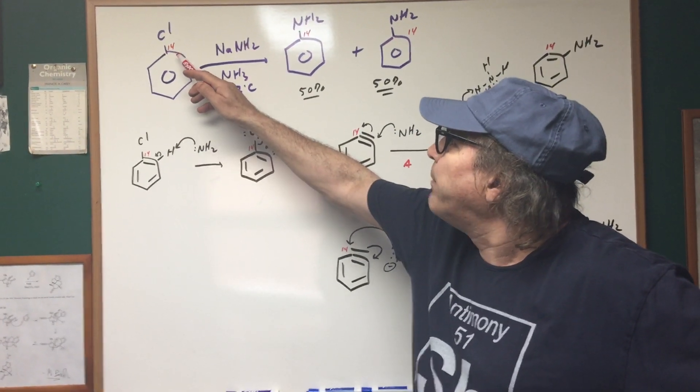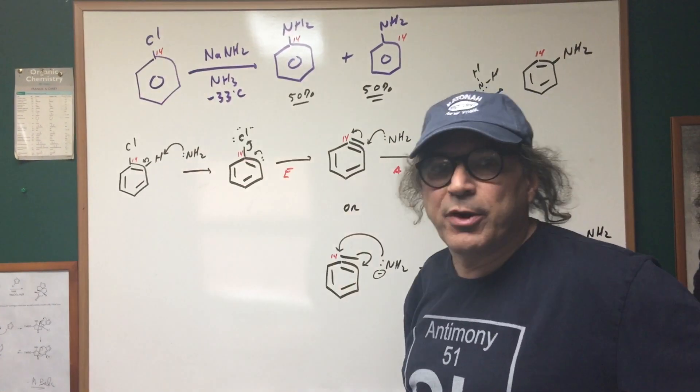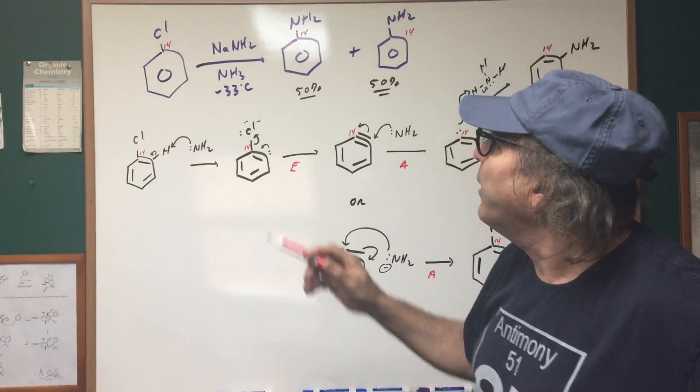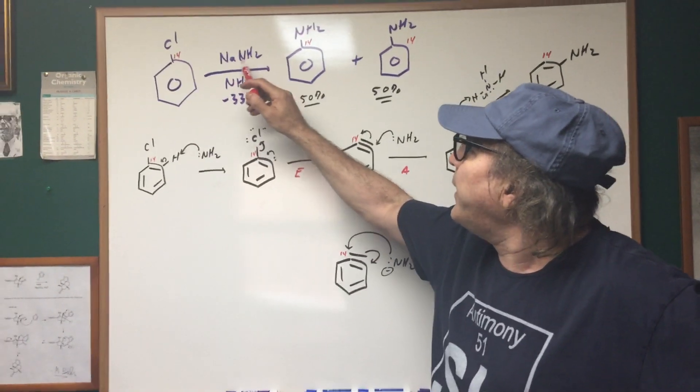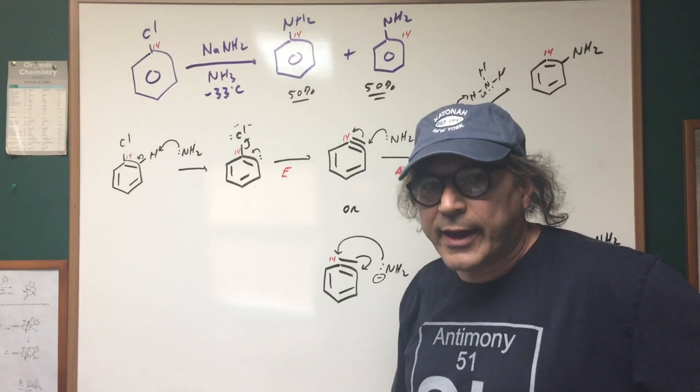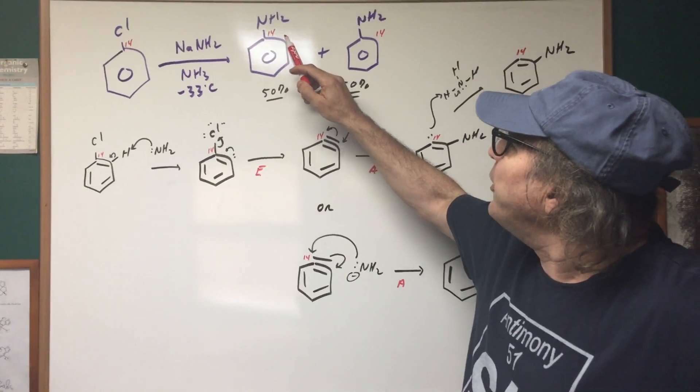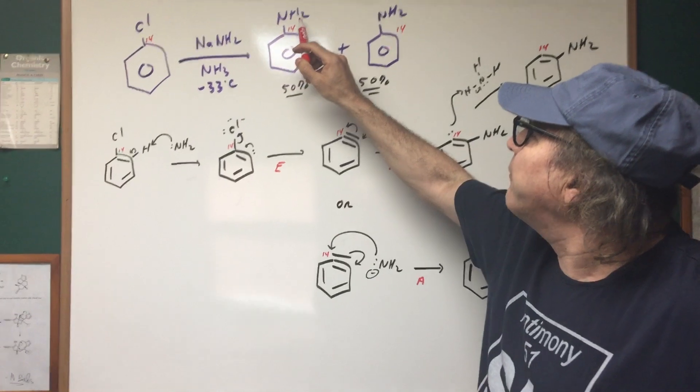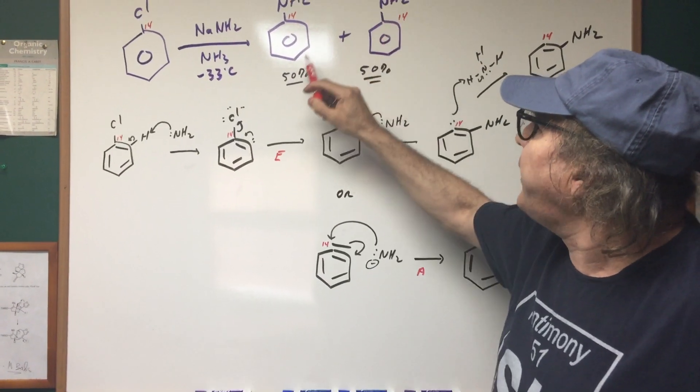I'm going to radio label carbon and I'm going to put a 14 there. So 14 is a radio labeled carbon. And I'm going to treat it with KNH2 and ammonia like we just did. But surprisingly, I get two products. And the first product looks like we just did. We replaced the chlorine with the nucleophile.